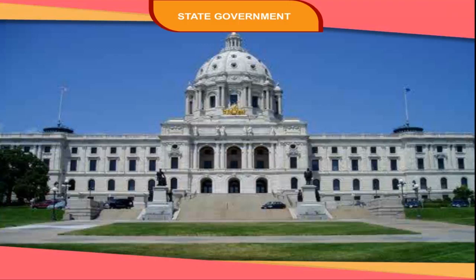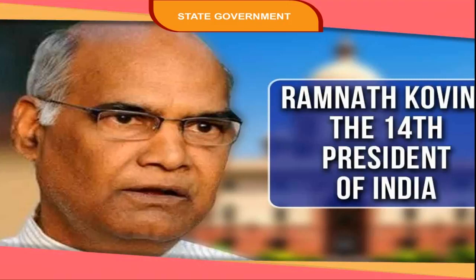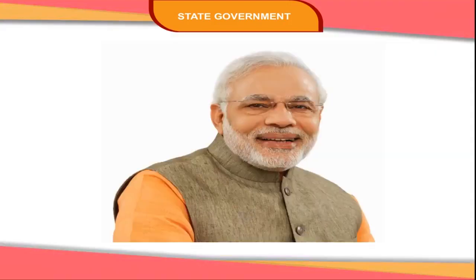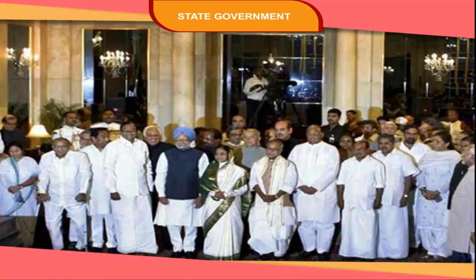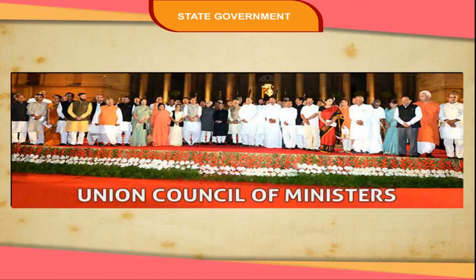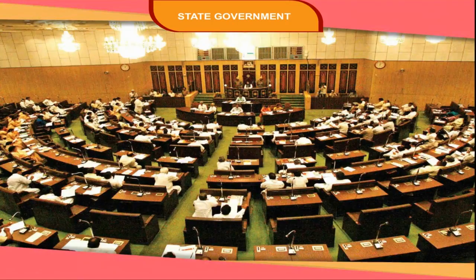The government at the state level functions almost similar to that of the central government. Just as we have the President, the Prime Minister and the Council of Ministers working at the centre, we have the Governor, the Chief Minister and the Council of Ministers at the state level. As the union legislature, Parliament enacts laws for the entire country, the state legislature enacts laws for its own state.